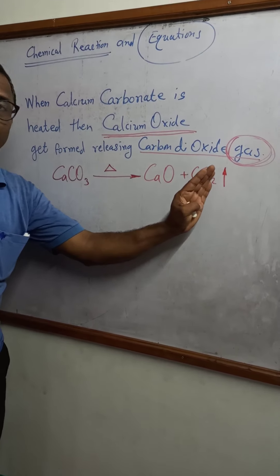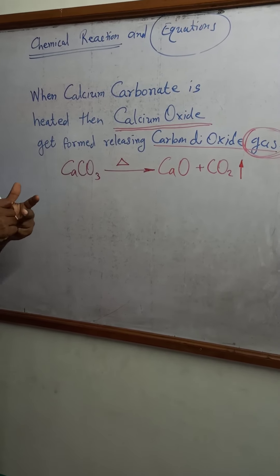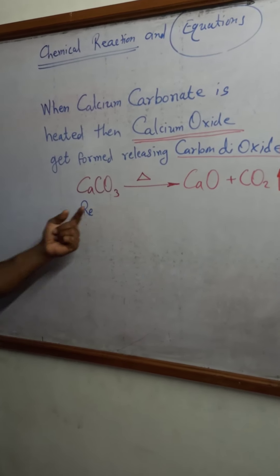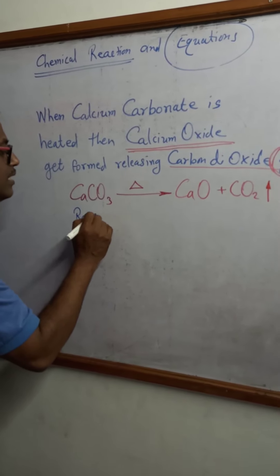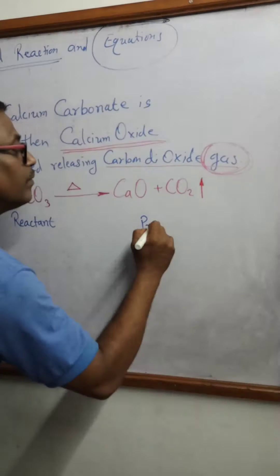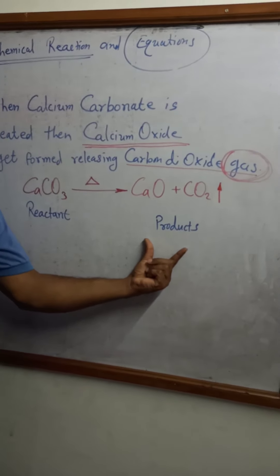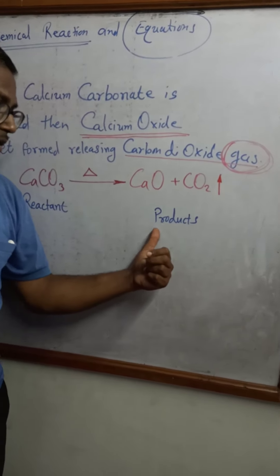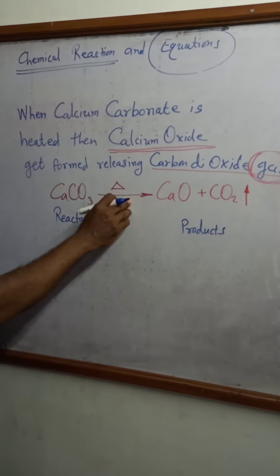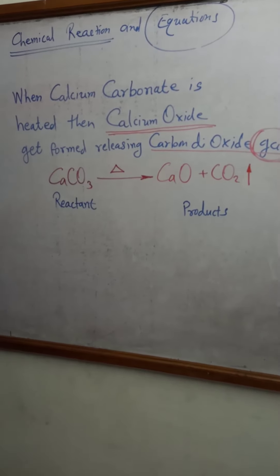In a chemical reaction there is an arrow in between two parts. The left part is the reactant (R-E-A-C-T-A-N-T). The right part is the reaction product. If there are two matters on the right side, those are our products. This arrow shows what we did in the reaction — we heated the reactant.